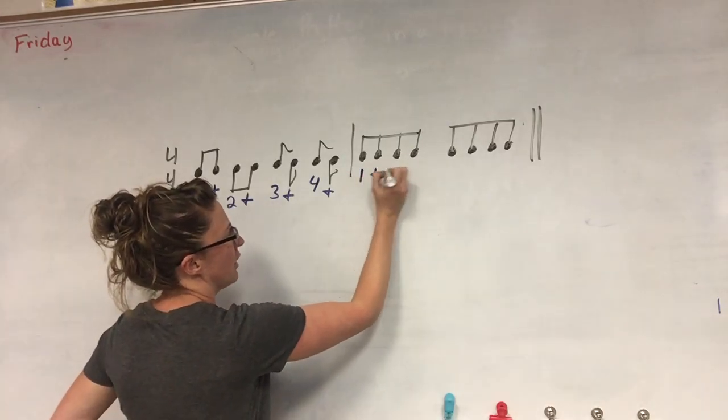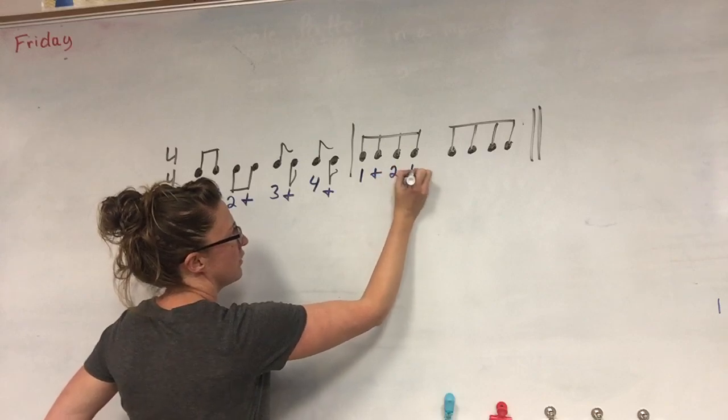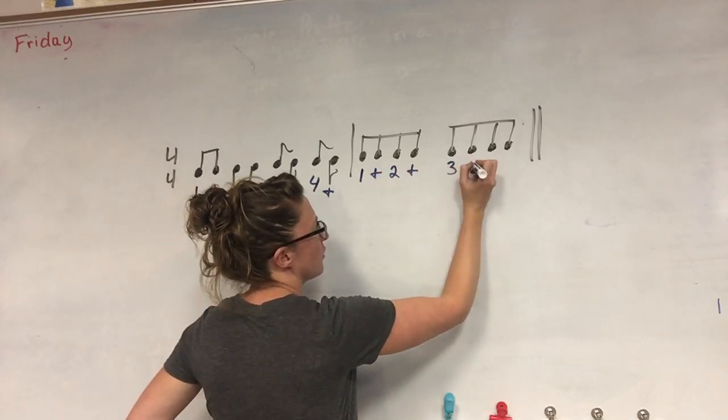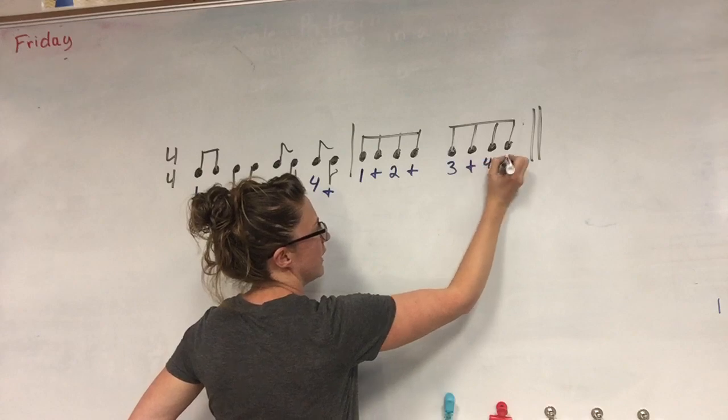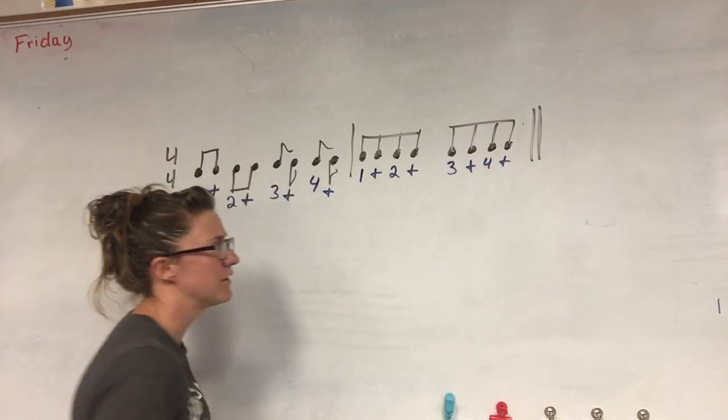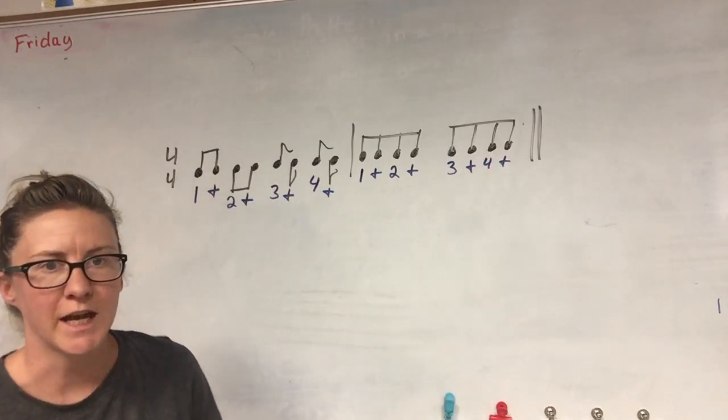Okay, same thing when they're barred in groups of four. It was one and two and three and four and. First half is the number, second half is the and.